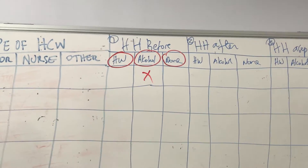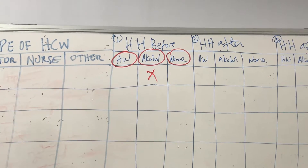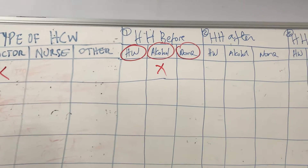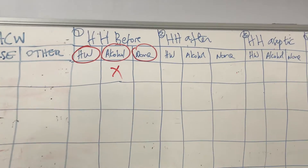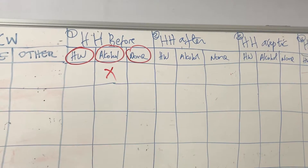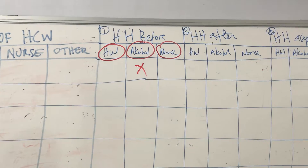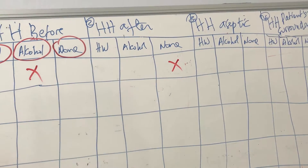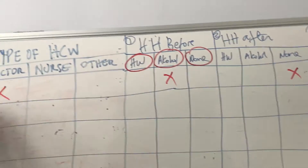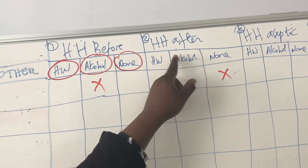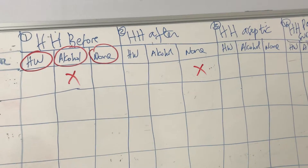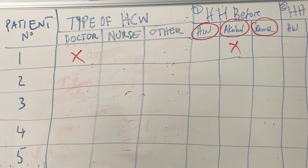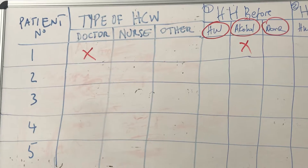After he finishes what he decided to do, he will move out. If he does not wash his hands after dealing with this patient, then you tick none. So for hand hygiene after patient contact, it's none.